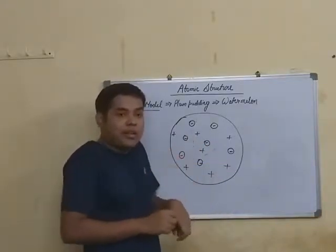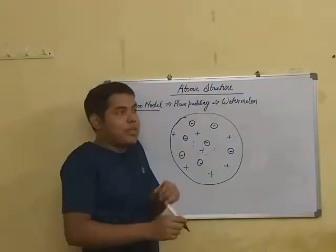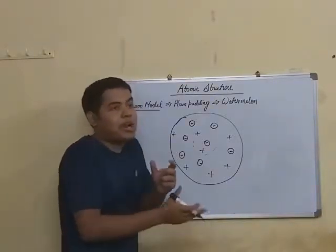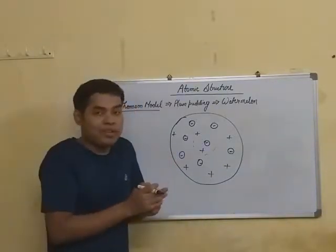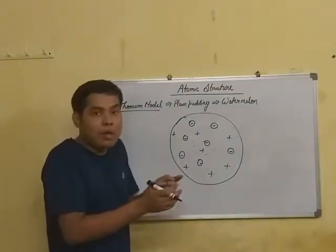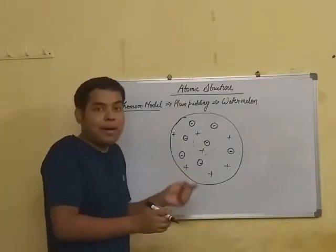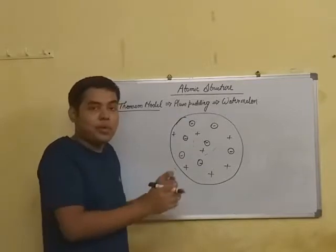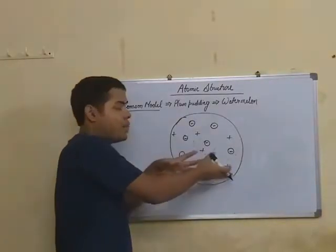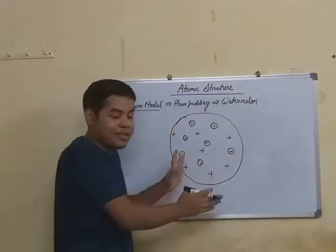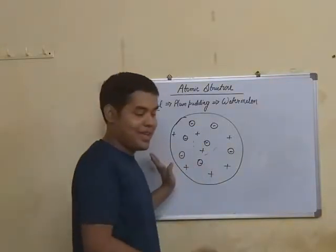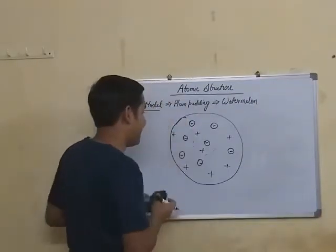Again, there was another drawback — it is a static model; it does not explain electronic movement. In some experiments, electrons are mobile particles and they move. But Thomson's model failed to explain all this, so this model was discarded very soon after its publication.